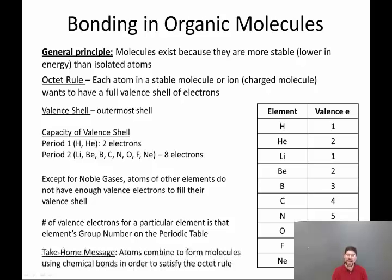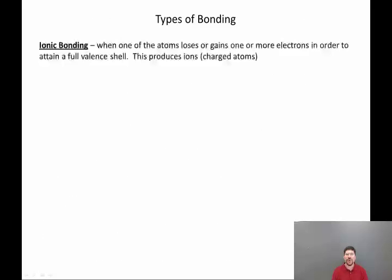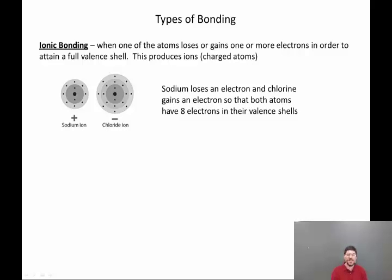Okay, so atoms combine to form molecules using chemical bonds in order to satisfy the octet rule. What are the different types of chemical bonds? One type that you may have been exposed to in a general chemistry course is ionic bonding. That is when one of the atoms loses or gains one or more electrons in order to attain a full valence shell. So once an atom gains or loses electrons, electrons of course have negative charges. If it loses an electron it will have an overall positive charge. If it gains electrons it will have a negative charge.